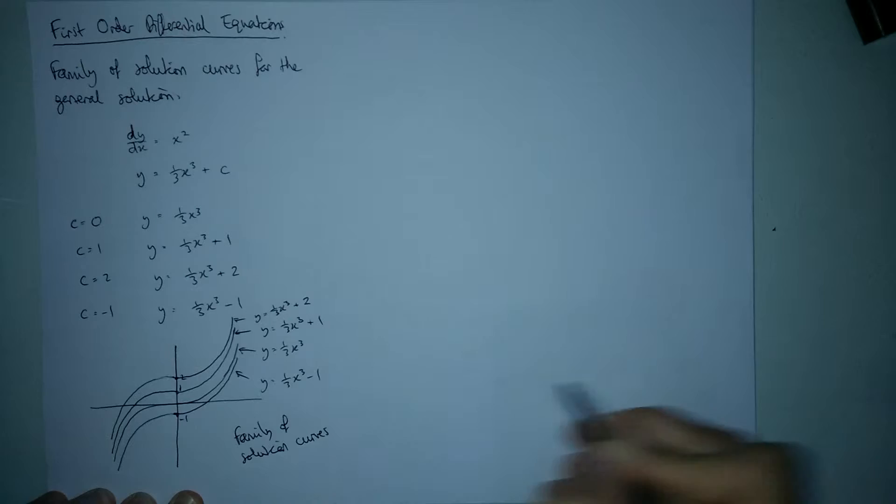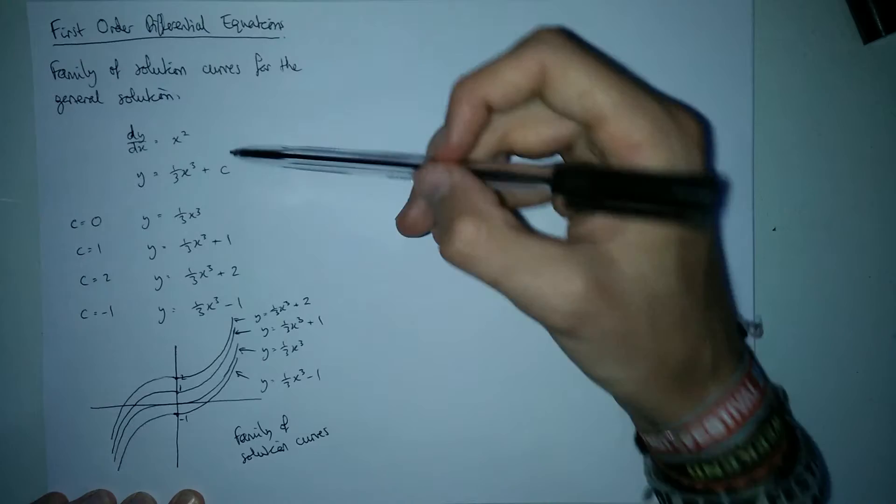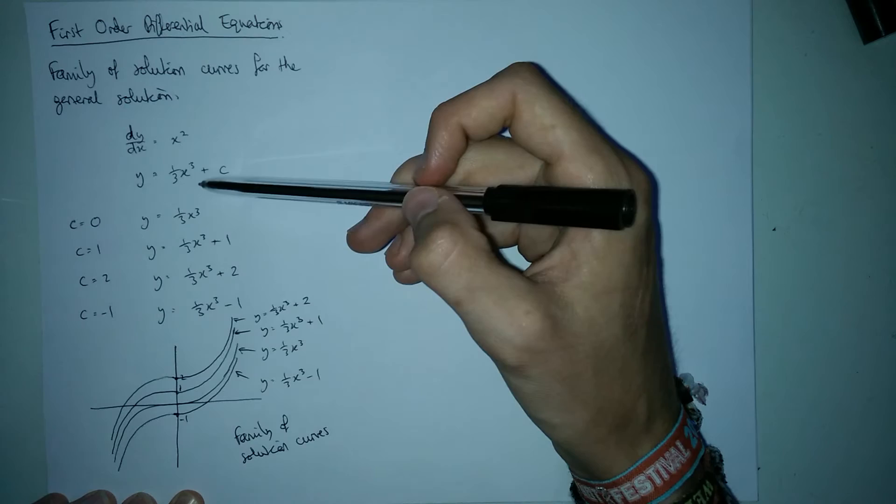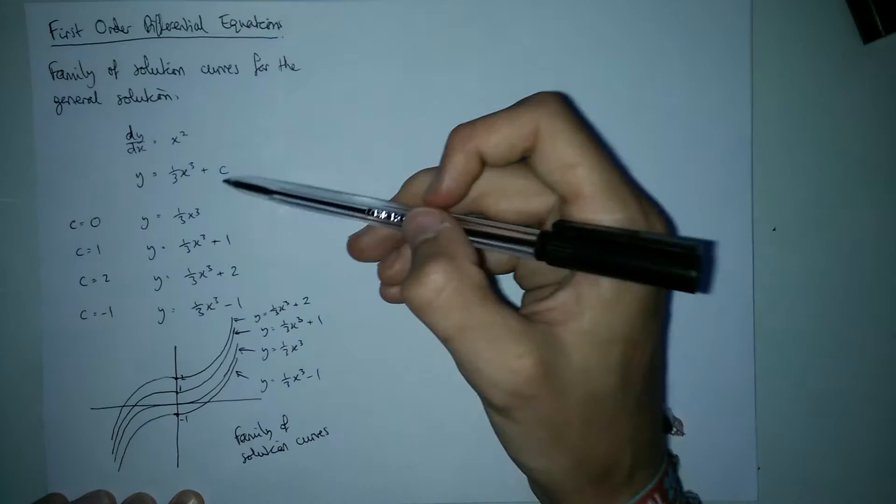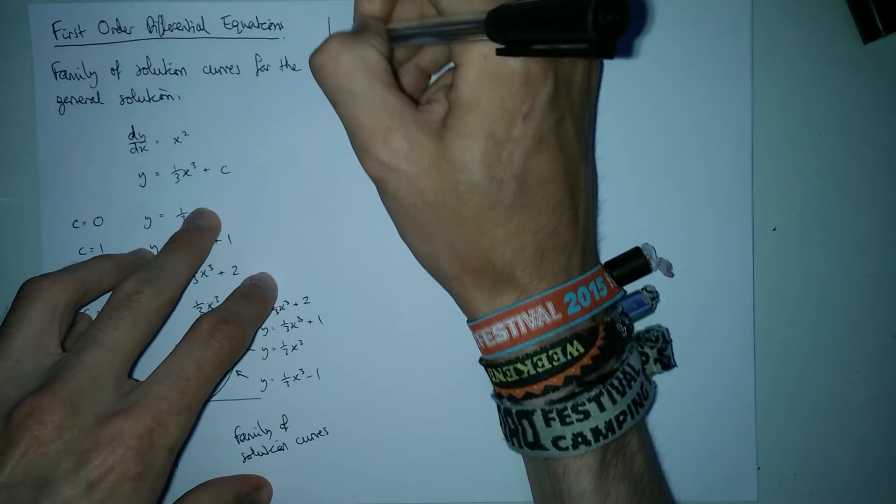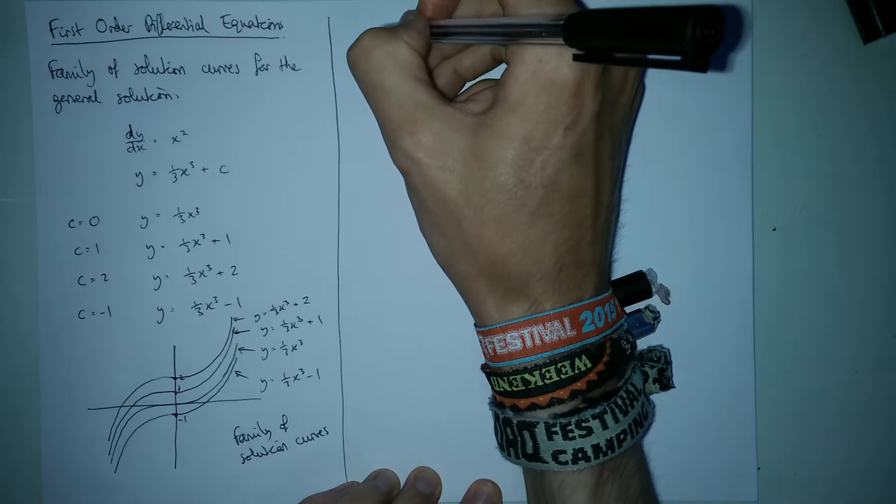So essentially what you're trying to do is once you've found your general solution, you vary the value of c and then you sketch the curve. This is quite a nice solution because you can quite easily see what the curve looks like. Normally the hardest thing about sketching solution curves is not varying the value of c, it's just figuring out what the curve is in the first place. The best way of doing that is by showing you some more examples.